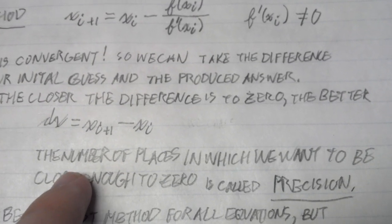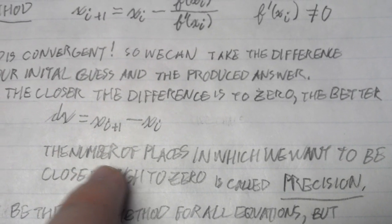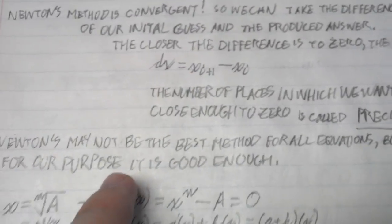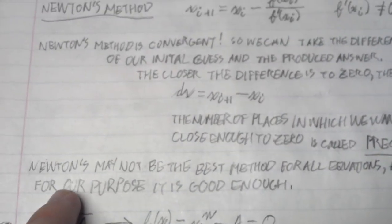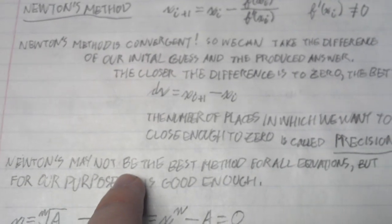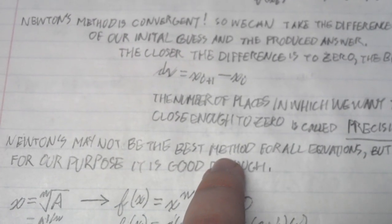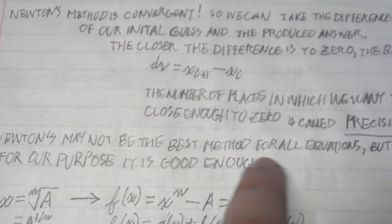The number of places in which we want to be close enough to zero is called precision. It should be noted that Newton's method may not be the best method for all equations, generally if the numbers start to look weird.